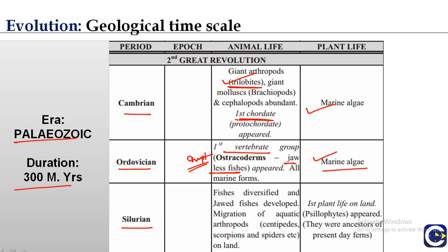In the Silurian period, fishes diversified and jawed fishes developed. There was also migration of aquatic arthropods onto land. The Silurian period is also known for the origin of jawed fishes, wingless insects, and the first plant life on land.